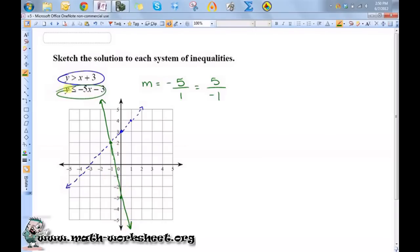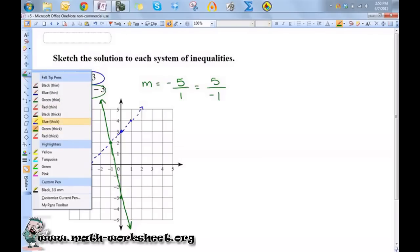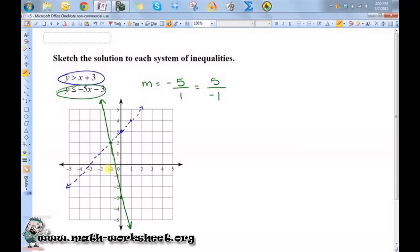So this one is saying all the area less than that. So this is all the values underneath this line. Okay, so here's the area for this one. And this is saying the area greater than that, so all the ones above this one. And I'll do this one in blue.